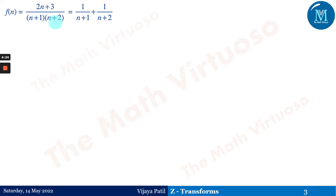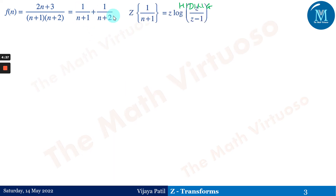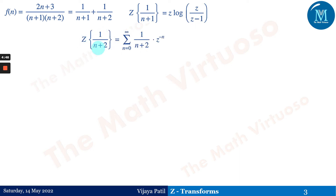The second function is f(n) = (2n+3)/((n+1)·(n+2)). By the hiding method for partial fractions, the denominator separates into 1/(n+1) + 1/(n+2). The Z-transform of 1/(n+1) is z·log(z/(z-1)), as established in the previous session. Similarly, we derive the Z-transform of 1/(n+2) as the summation of 1/(n+2)·z^(-n) from n=0 to infinity.